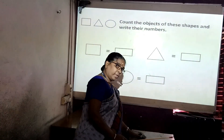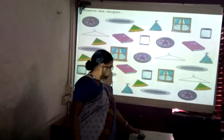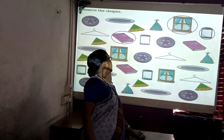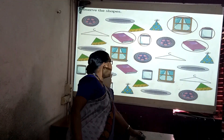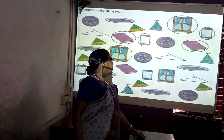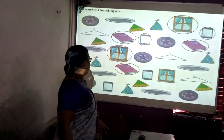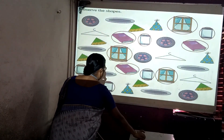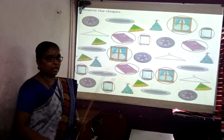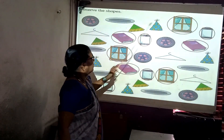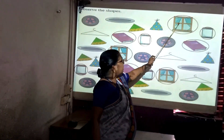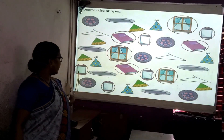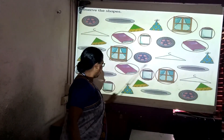Let us see how many rectangles there are. See first — one, two, three, four, five, six, seven, eight, nine, ten, eleven. Eleven rectangles are there.